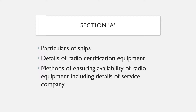Section A describes the ship's particulars: the name of the ship, port of registry, official number, and then it goes on to give details of radio certification and equipment which has been carried on the particular ship, as well as methods of ensuring availability of radio equipment, including details of the servicing company.